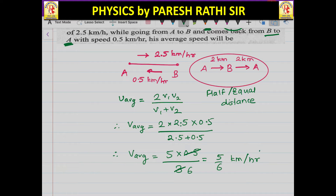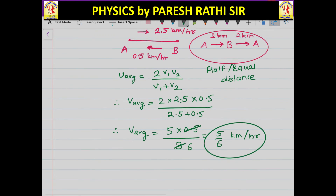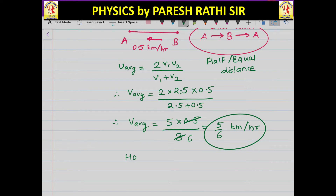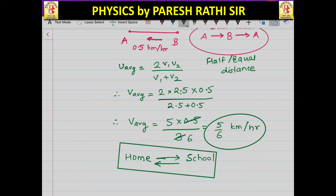So this is our final answer. This is the problem of equal distance — a boy goes from home to school and back. For equal distance, V average equals 2V1V2 upon V1 plus V2.